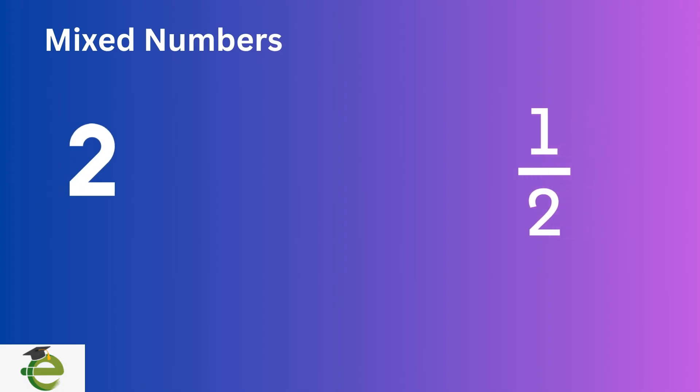A mixed number is a combination of a whole number and a fraction. It represents quantities greater than one that are not whole. For example, two and one-half is a mixed number, where two is the whole number and one-half is the fractional part.